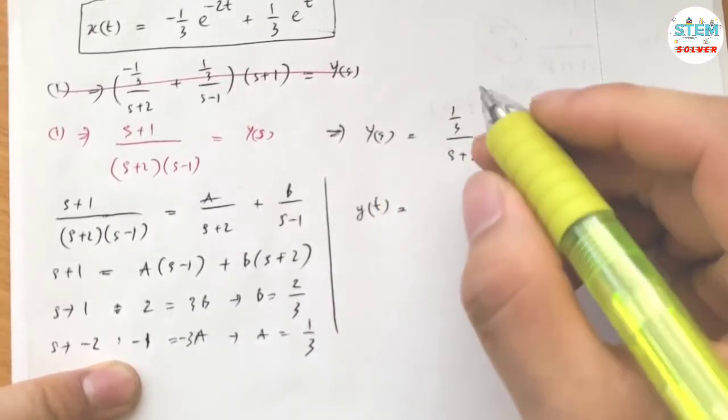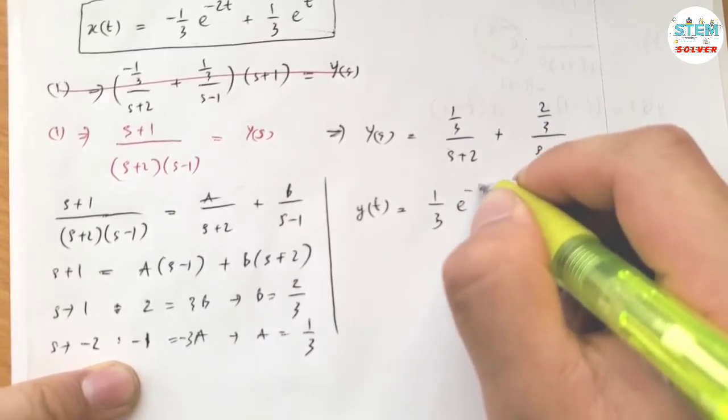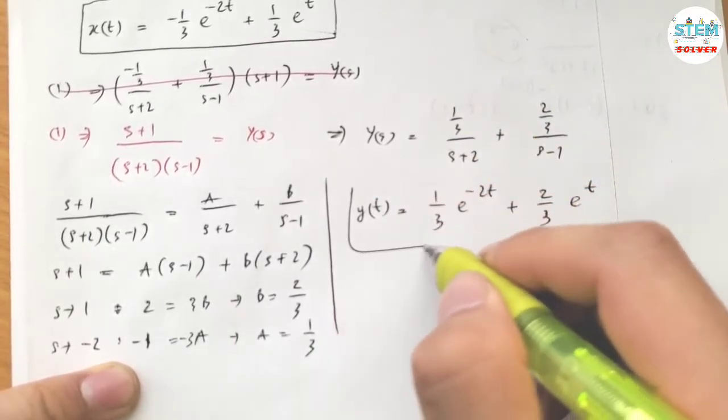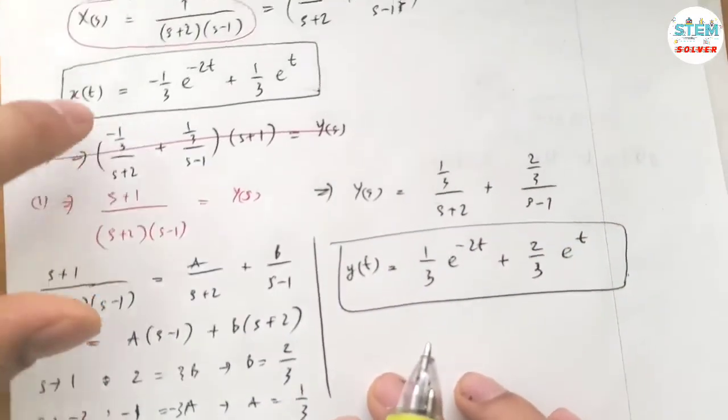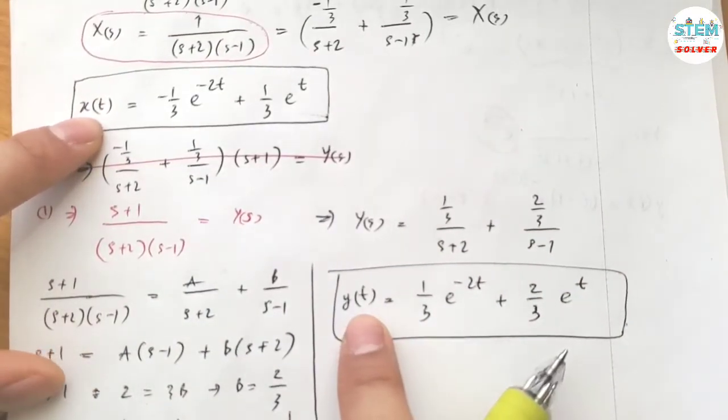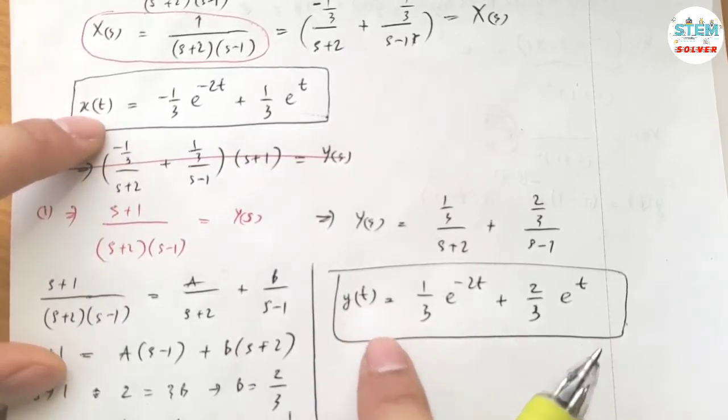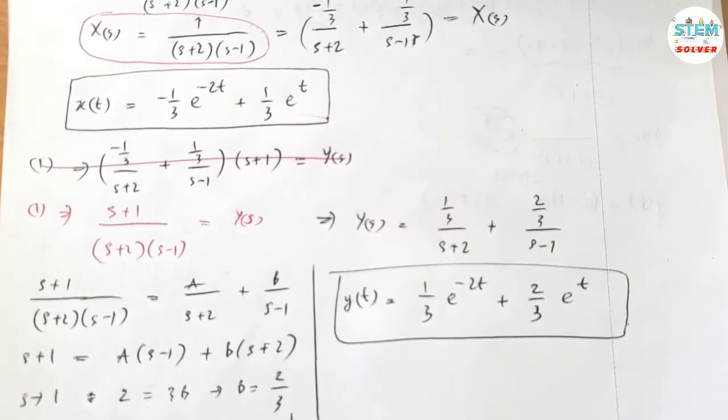Then y of t is equal to, apply the L inverse, I have 1 third e to the negative 2t plus 2 thirds e to the t. So this is our x of t and y of t. This is your solution of the system of linear equations. That's it.